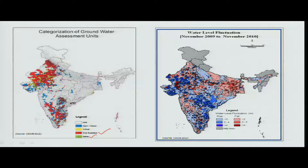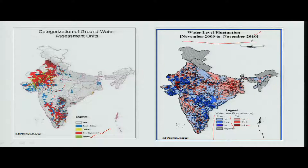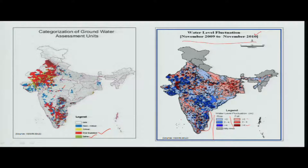This shows the fluctuations and how they vary between November to November — yearly fluctuations during this period. Fluctuation is more in the peninsular area, and in some areas the fall is high, whereas the bluish tinge shows the rise in level — whether it is a normal or higher rise. This nationwide information helps regions plan agriculture decisions about whether to develop, continue, or hold further expansion.